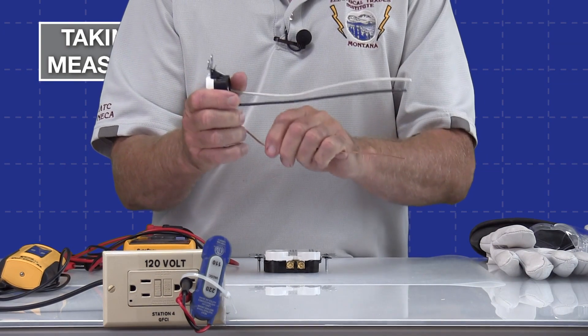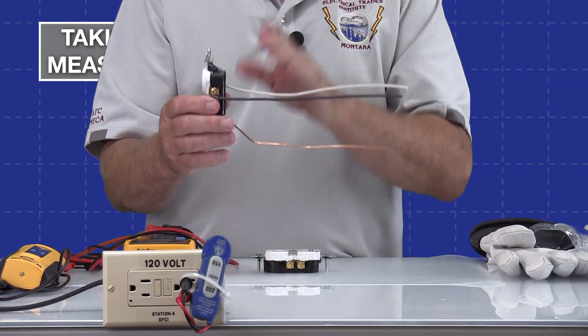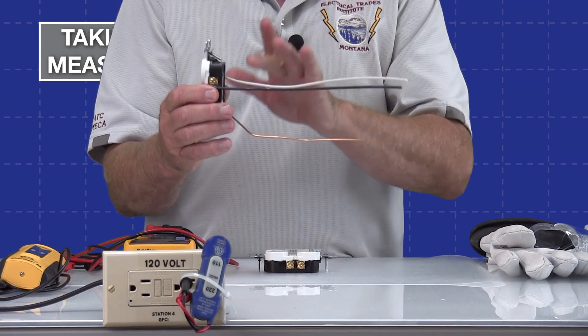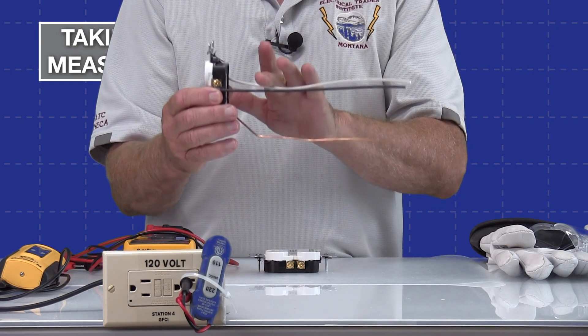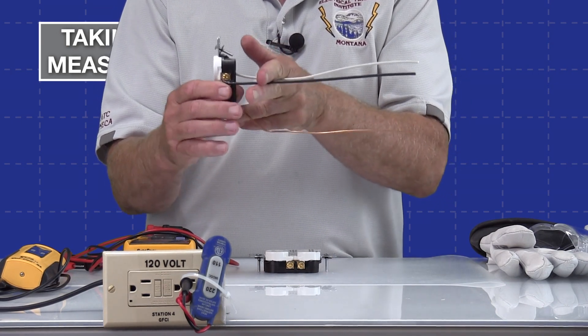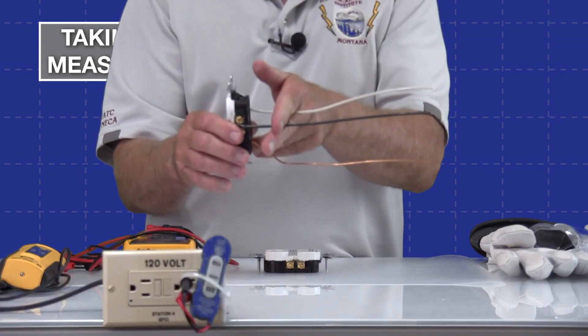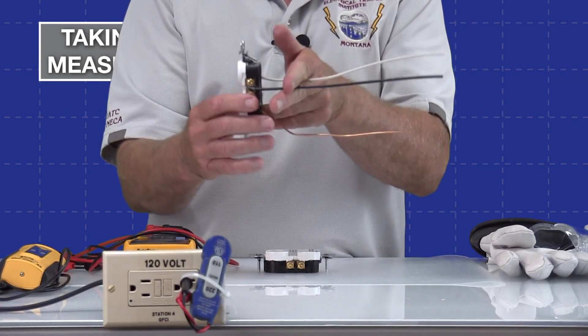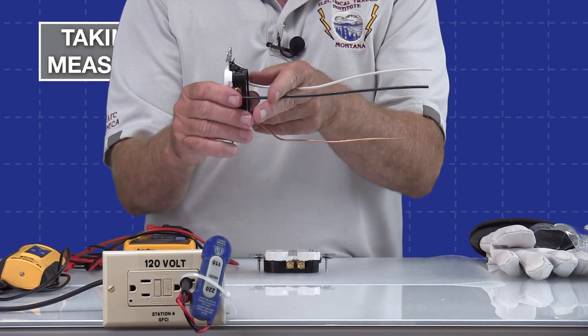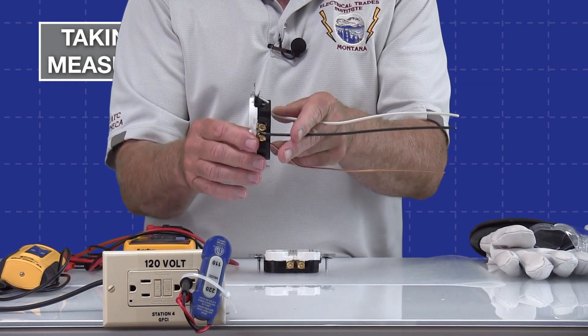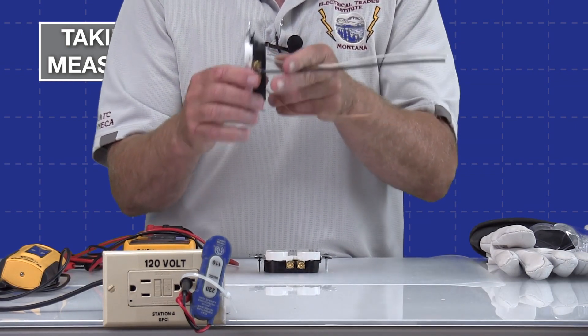As far as a GFCI receptacle, the way they work, they monitor between the ungrounded conductor and the grounded conductor, the hot and the neutral wire, and they look for an imbalance. There's a sensor inside the GFCI that's basically monitoring these two wires. If it sees an imbalance, in other words, if the black wire had one ampere on it, you need to have close to one ampere on the white wire or it trips.